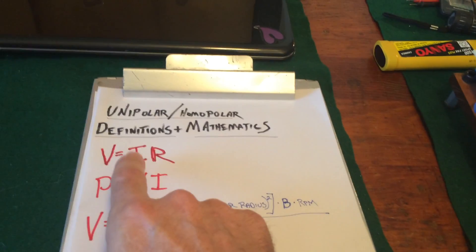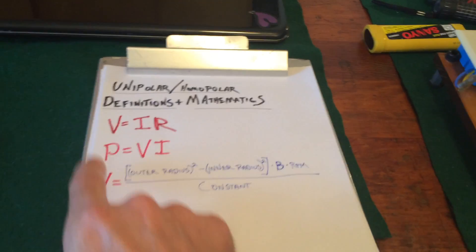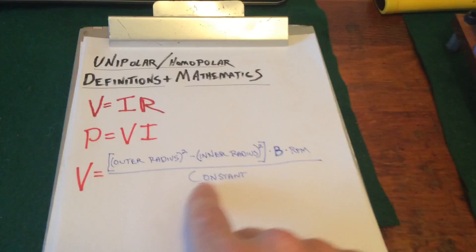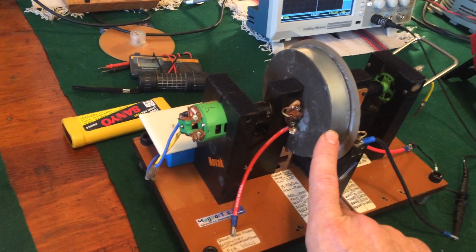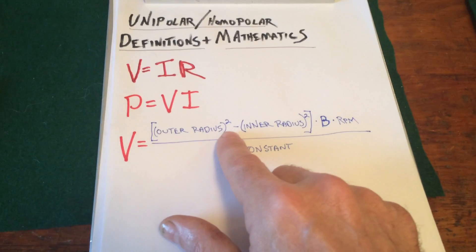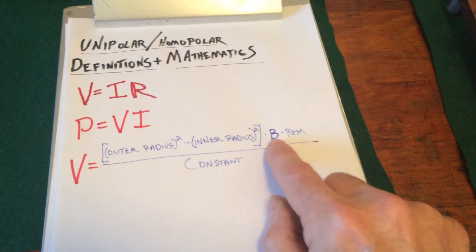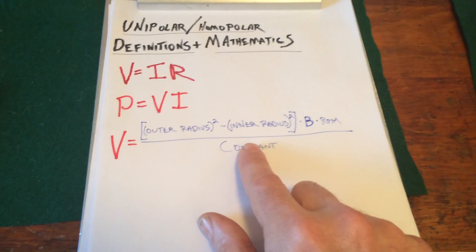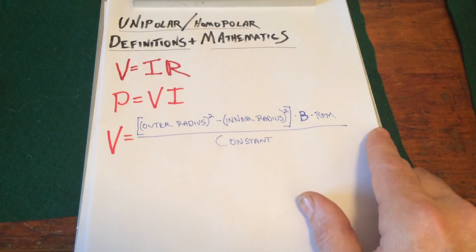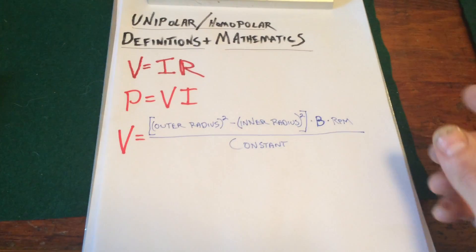So, with a very low resistance, a very high current potentially. But the voltage — what is the voltage? The voltage is dictated by this function here. We have a pickup at a low radius and a pickup out at a high radius. The voltage is a function of the outer radius squared minus the inner radius squared, and all of that times the magnetic field strength and the RPM. That's all multiplied by some constant, depending on what units you decide to use — this constant will stay the same if you stick with those units.